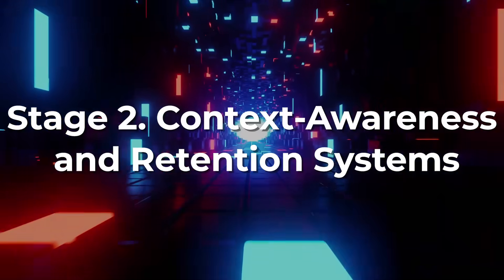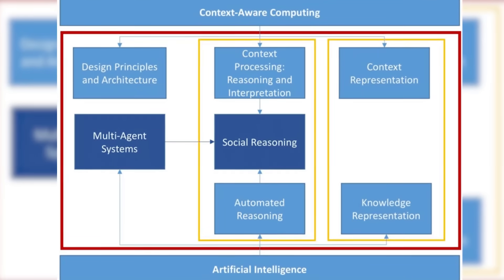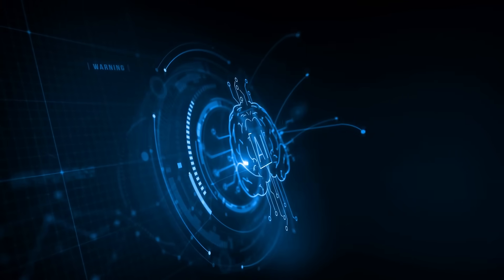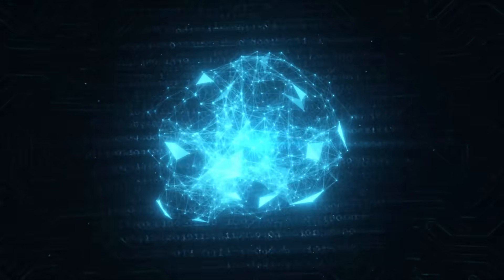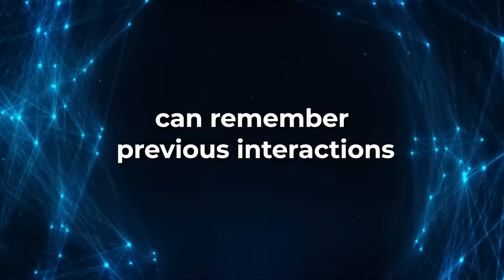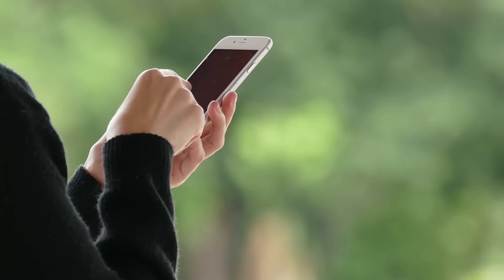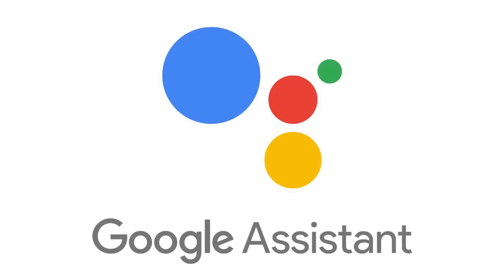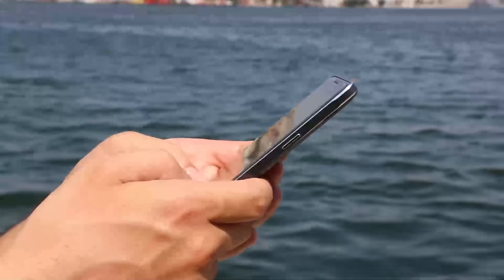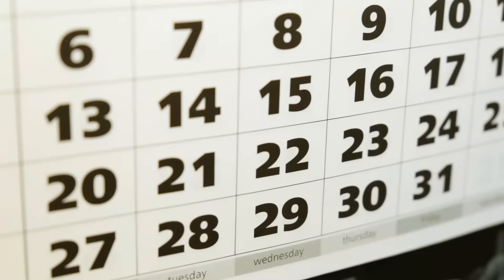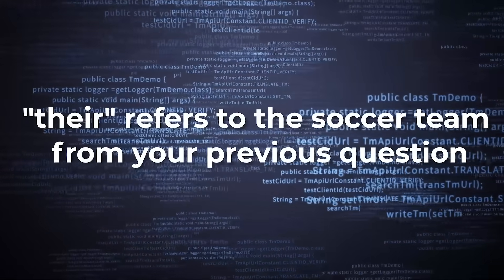Stage 2: Context Awareness and Retention Systems. Moving a step beyond rule-based AI systems, we arrive at context awareness and retention systems — a significant evolution in artificial intelligence. These AI systems are capable of understanding and retaining context, meaning they can remember previous interactions and use that knowledge to inform future responses. A great example is your smartphone assistant, like Siri or Google Assistant. They not only process and execute commands, but they also learn from your past interactions. If you ask 'Who won the soccer game yesterday?' and then ask 'When is their next match?', the system understands that 'their' refers to the soccer team from your previous question.